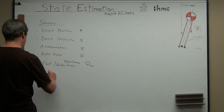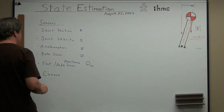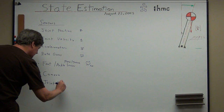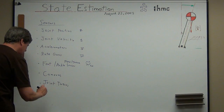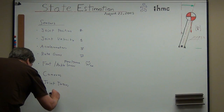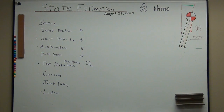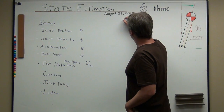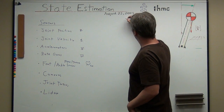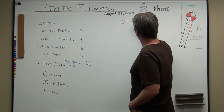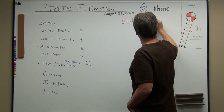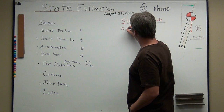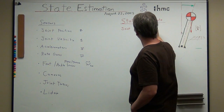What else do we usually have? Camera. Sometimes joint torques. Cameras and LiDAR. So what do we want to know from the other column — the things we want to measure, the state of the robot? What is the state we want to know? Some of these pretty much transfer straight over, so we do want those joint positions and velocities.